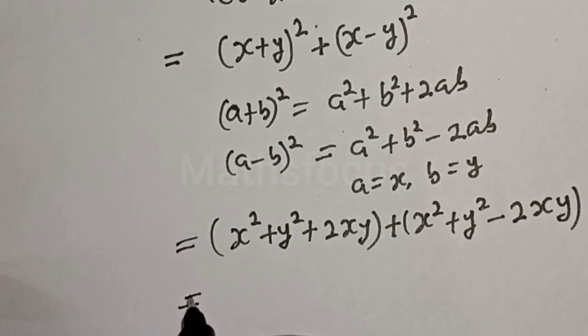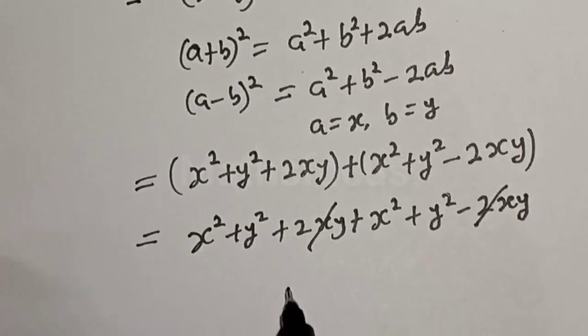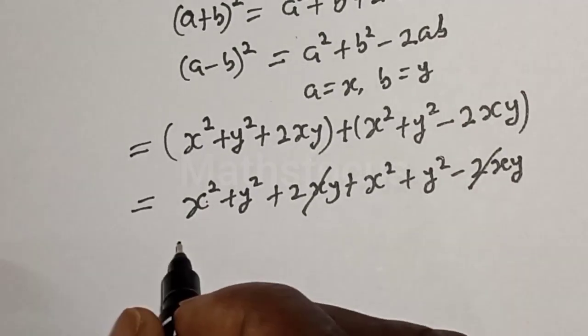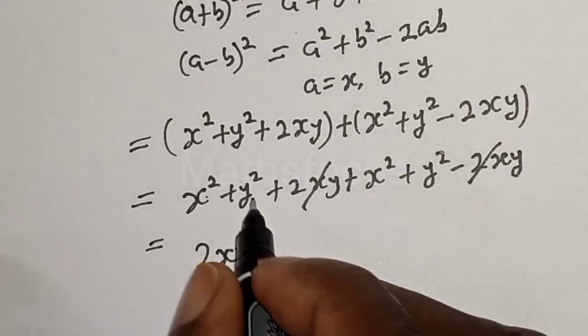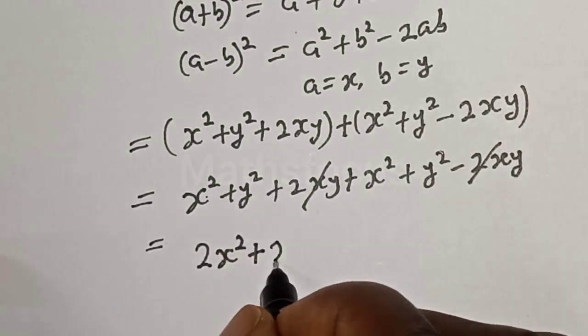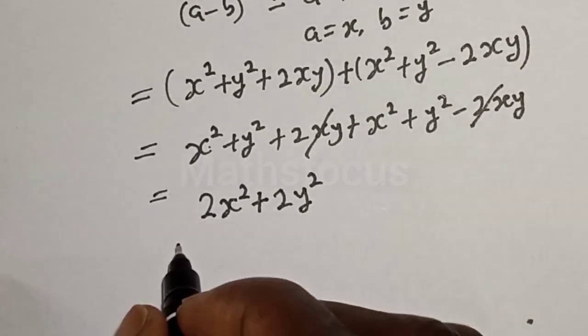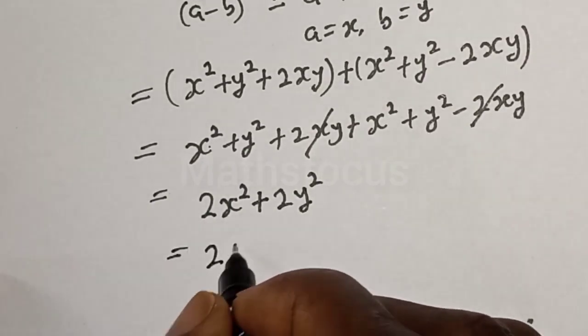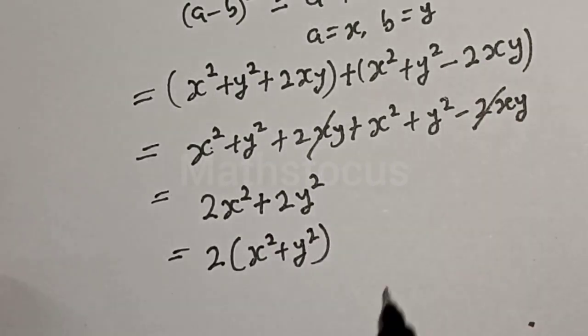Then this equals—now the 2xy terms will cancel. x² plus x² equals 2x², and y² plus y² equals 2y². Factor out 2: we have 2(x² + y²). But we know that x equals 2000 and y equals 22.